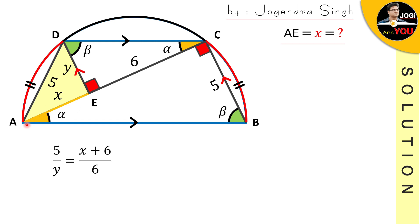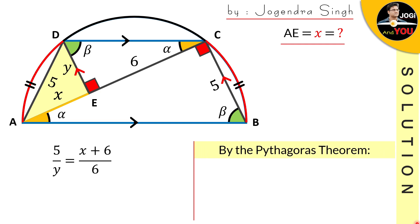There is one more triangle — the yellow triangle ADE. This is a right-angle triangle because DE is perpendicular to the straight line AC. If there is 90 degrees on the right side of the perpendicular, then 90 degrees remains on the left because a straight angle is 180 degrees. So this is also a right-angle triangle, and its three sides are x, y, and 5 — where 5 is the hypotenuse, which is opposite the right angle. So according to the Pythagorean theorem: x squared plus y squared equals 5 squared (25).